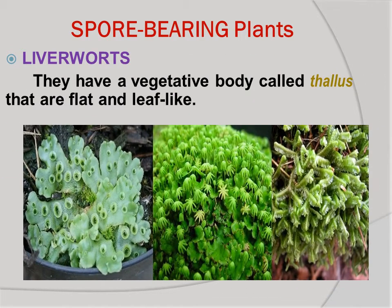In liverworts, the thallus contains the male and female sex organs. In some species of liverworts, the thallus contains gemmae cups that carry the gemmae. When gemmae detach from the plant, they may immediately germinate in a favorable environment.